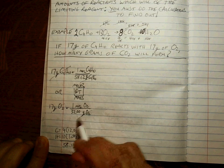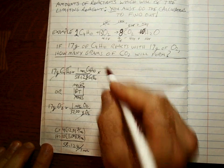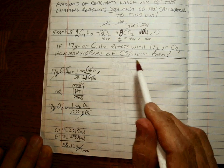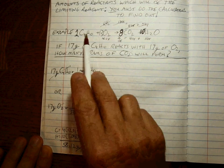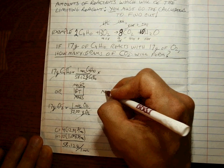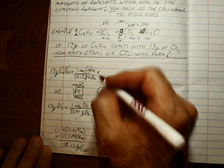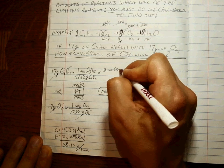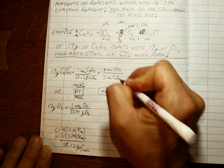Now we've converted to moles of our starting materials. Next, compare each starting material to the amount of product formed using the mole-to-mole ratio. There are 8 moles of CO2 formed for every 2 moles of C4H10 that react — keep those repeating steps in mind for each reactant.